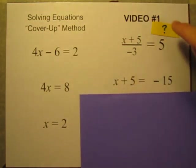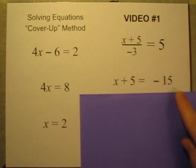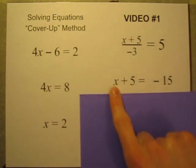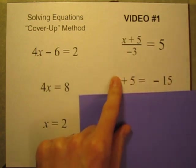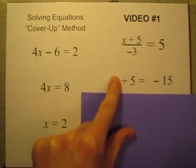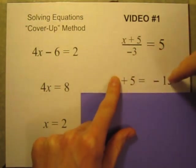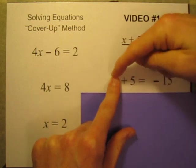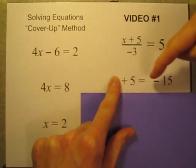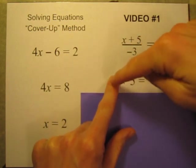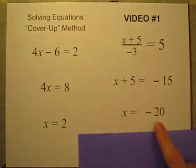So if x plus 5 is equal to negative 15, now let's solve for x. Let's do it again. Let's cover up this chunk. What plus 5 equals negative 15? If you just stop and think about it, it makes sense that negative 20 plus 5 equals negative 15. If you start at negative 20 and get 5 places bigger, you get to negative 15. So this x, this chunk, must be negative 20.